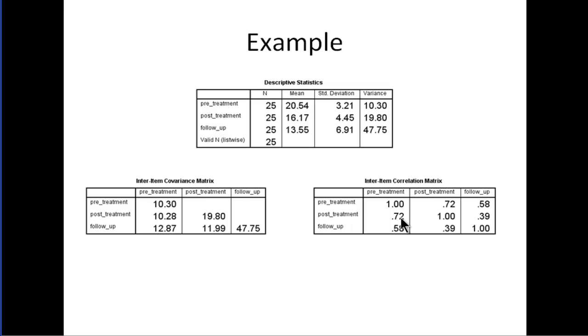So what you see is pre-treatment to post-treatment the correlation is 0.72, and then pre-treatment to follow-up you get a correlation of 0.58, so it's reduced in magnitude. You not only get differences in variances across time, you get differences in the strength of the association between scores from one level to the next.